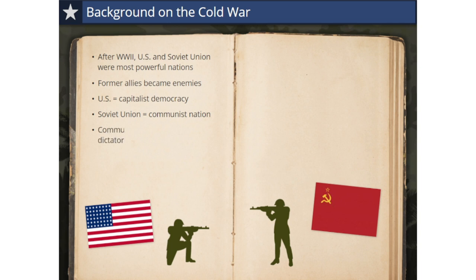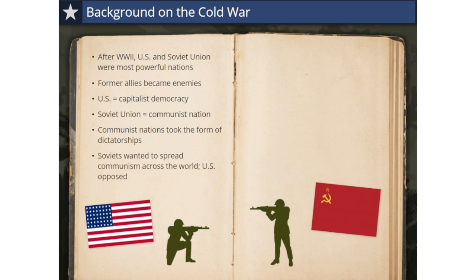In reality, communist nations like the Soviet Union took the form of dictatorships. Citizens were poor, were the victims of government propaganda, lacked basic rights like freedom of speech, and could not freely elect their leaders. The Soviet Union wanted to spread a communist revolution across the entire world.